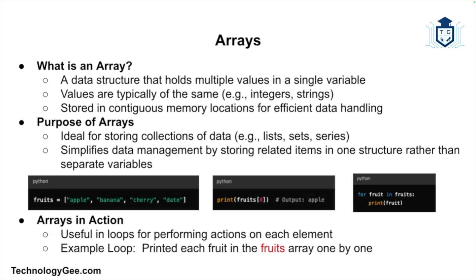An array is a data structure that allows you to store multiple values in a single variable. These values are usually of the same data type, such as integers or strings, and they are stored in contiguous memory locations. Arrays are used when you need to store collections of data such as lists of numbers or a set of names. In the screenshot, the array 'fruits' contains four elements. You can access individual items by referencing their index — the array index starts at zero, so fruits[0] returns 'apple', fruits[1] returns 'banana', and so on.